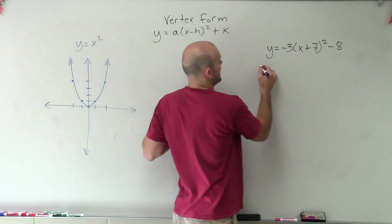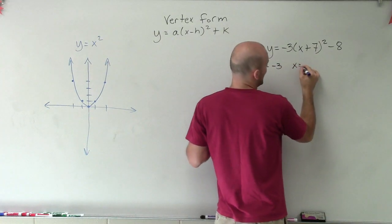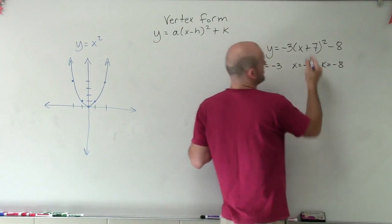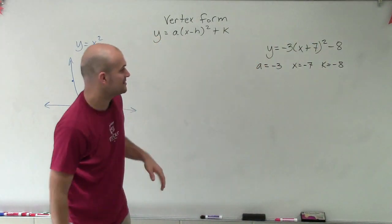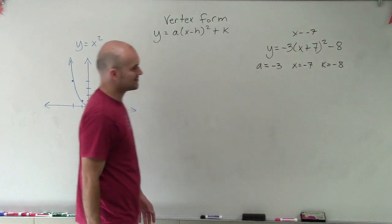Now, when looking at vertex form, we know that a equals negative 3, h equals negative 7, and k equals negative 8. Remember, it's h opposite of negative 7. So we could say h opposite of negative 7. So that's why I know that h equals negative 7.